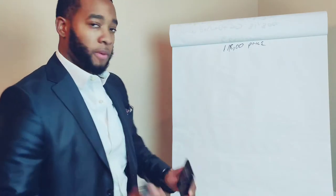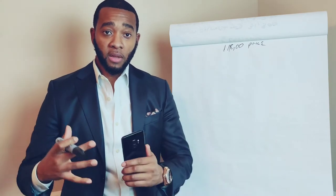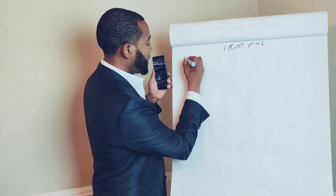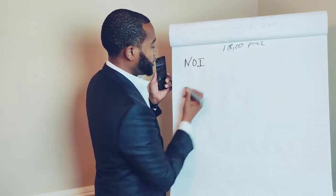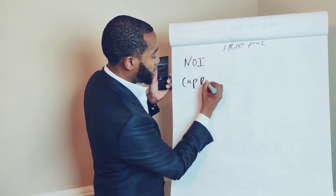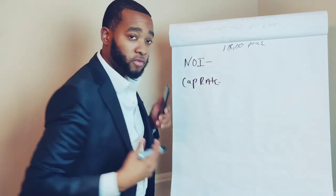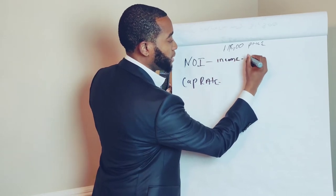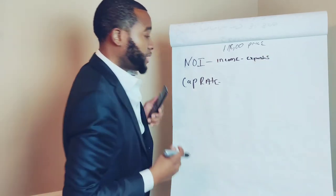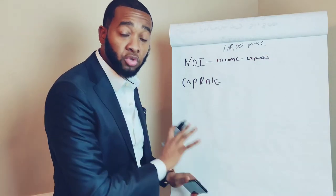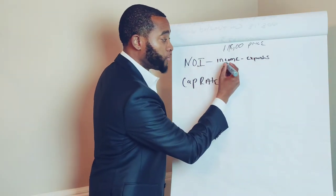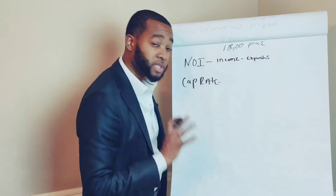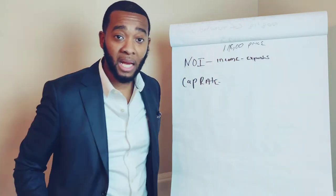Before we get into underwriting this deal and seeing whether it would be worth your time, let me talk for a second about NOI. These are key phrases you're going to hear from time to time — you're going to hear NOI, you're going to hear cap rate. NOI is Net Operating Income — it's income minus expenses. NOI does not include your debt; it does not include your interest payment back to the bank. It only includes your income as well as your expenses for the property.